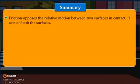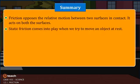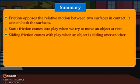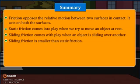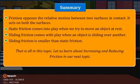Friction Summary: Friction opposes the relative motion between two surfaces in contact. It acts on both the surfaces. Static friction comes into play when we try to move an object at rest. Sliding friction comes into play when an object is sliding over another. Sliding friction is smaller than static friction. That is all in this topic. Let us learn about increasing and reducing friction in our next topic.